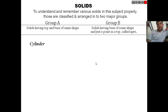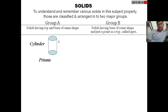For one example in Group A, let's see a cylinder. We can see that there are two bases having the same circular shape. These are also called prisms.